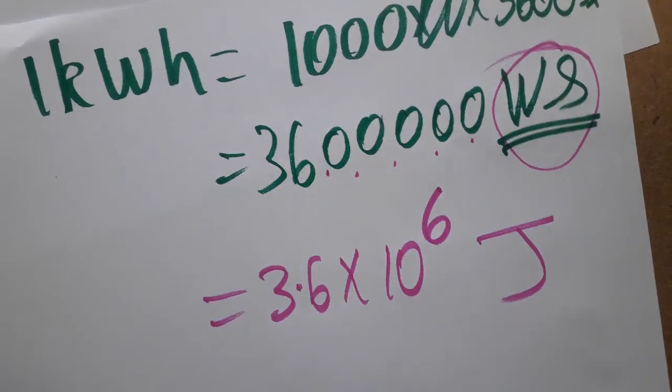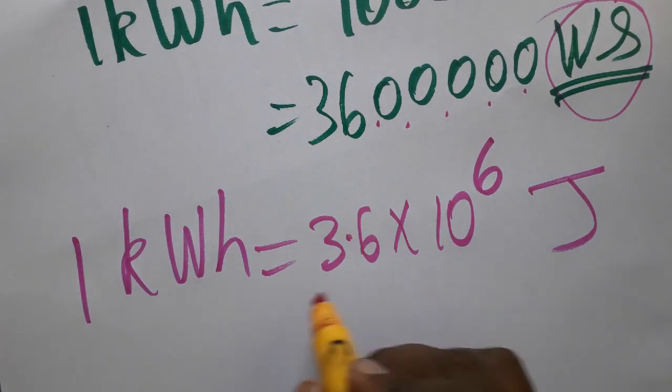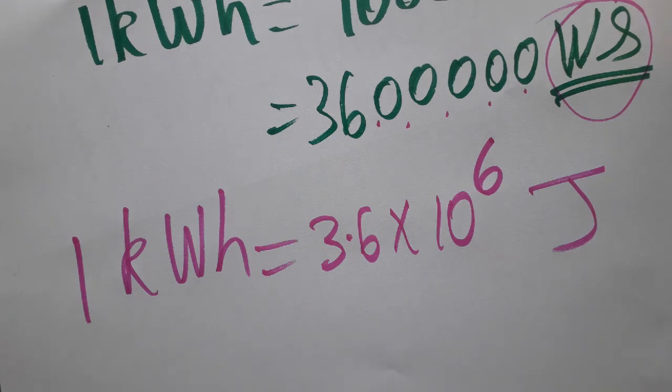So 1 kWh equals 3.6 times 10 to the power 6 joules. And also, kWh is an electrical commercial unit. They will be using kWh as an electrical commercial unit. Thank you.